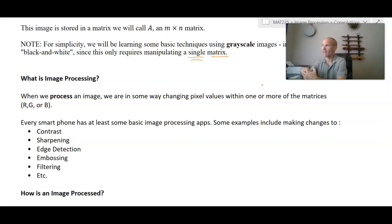Every smartphone, every device has some sort of basic image processing apps. So, you usually can go into your device and you can change the contrast, or you can sharpen the image, or do what's called edge detection, embossing, filtering, doing funky things, making people's faces look funny. We can do all of those things as a result of different types of matrix transformations.